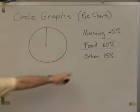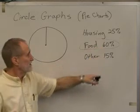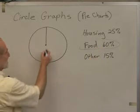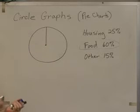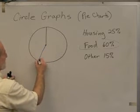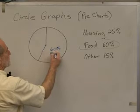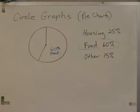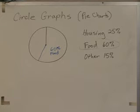60% is more than half, isn't it? Because 50% is half. So 60% is going to be more than half, but less than three-fourths, which is 75%. So, somewhere in here, that would be a reasonable 60% food, wouldn't it? It's more than half, it's less than three-fourths. So, as long as it's reasonable, I would give you full credit for it.